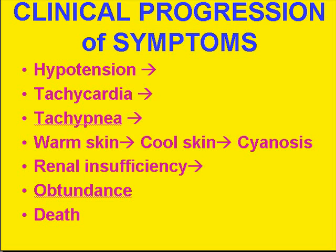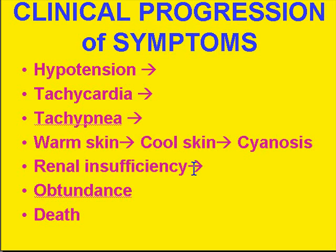Let's take a minute to talk about the clinical linear progression of symptoms in all kinds of shock. The first symptom is hypotension, followed closely by tachycardia due to catecholamines, and tachypnea. The skin is warm at first because of the pyrogens released in tissue destruction, followed by cool skin from extreme lack of perfusion, then cyanosis from inadequate oxygenation. Renal insufficiency follows, perhaps due to tubular necrosis, then obtundance — which means basically non-responsiveness — and you know what the last stage would be.